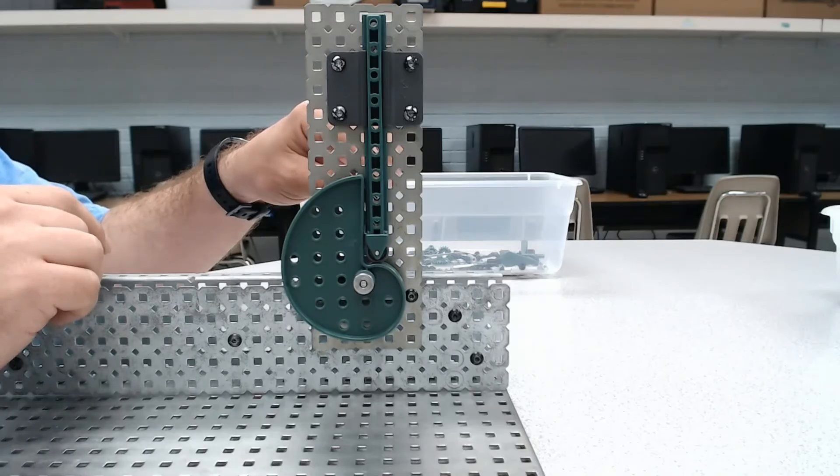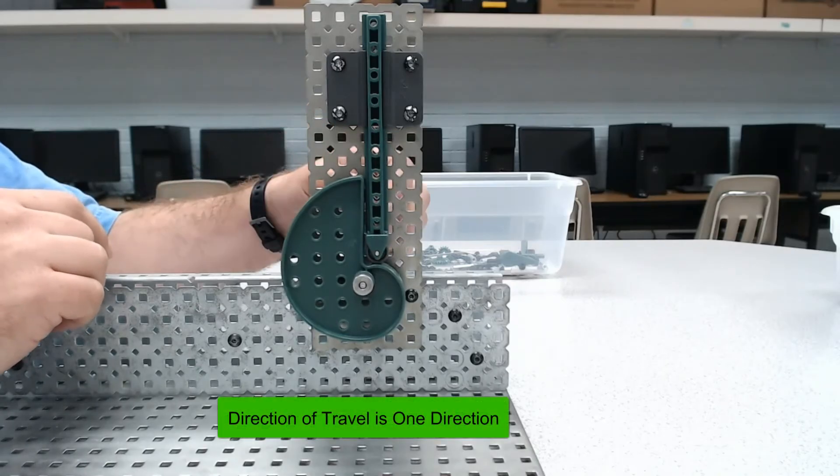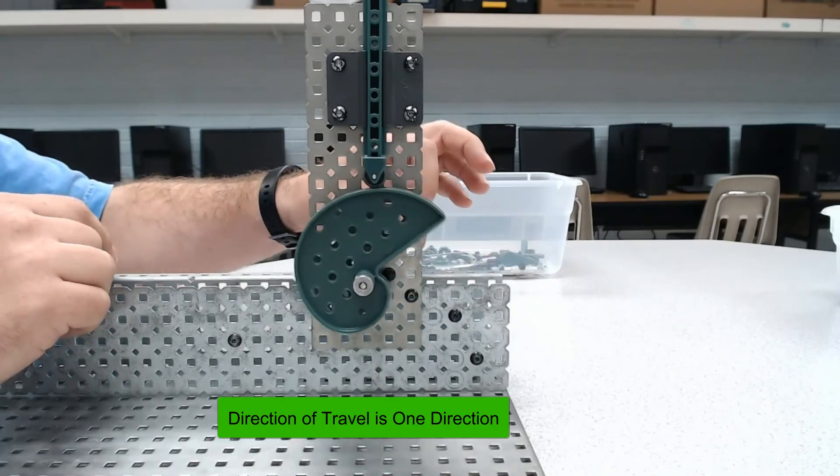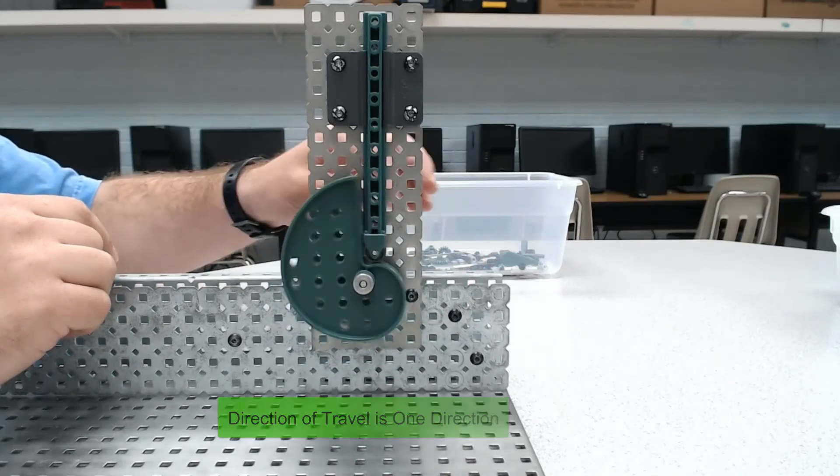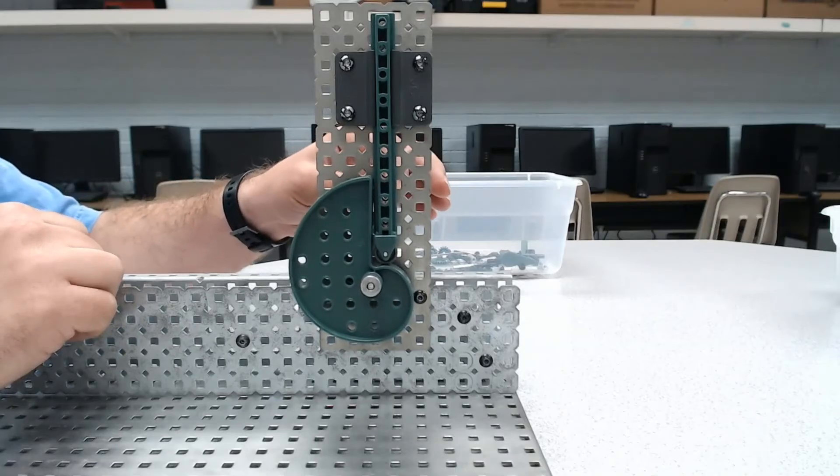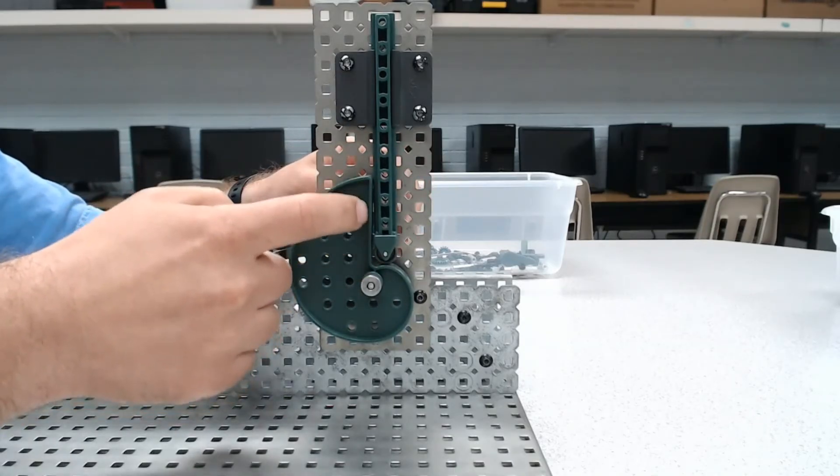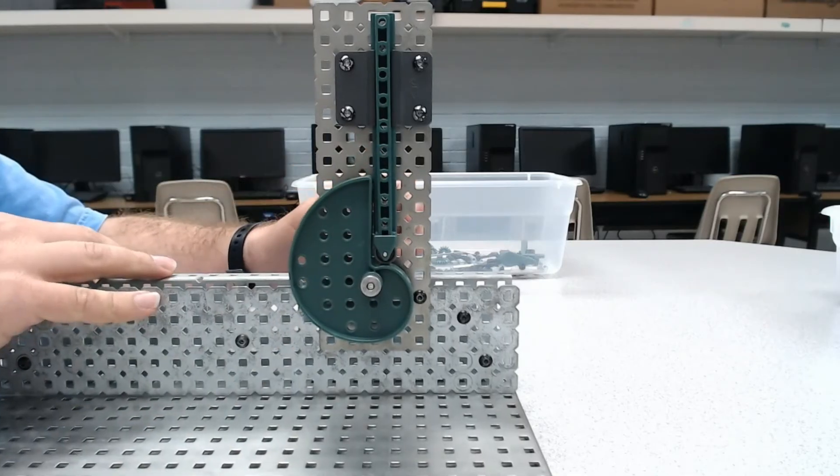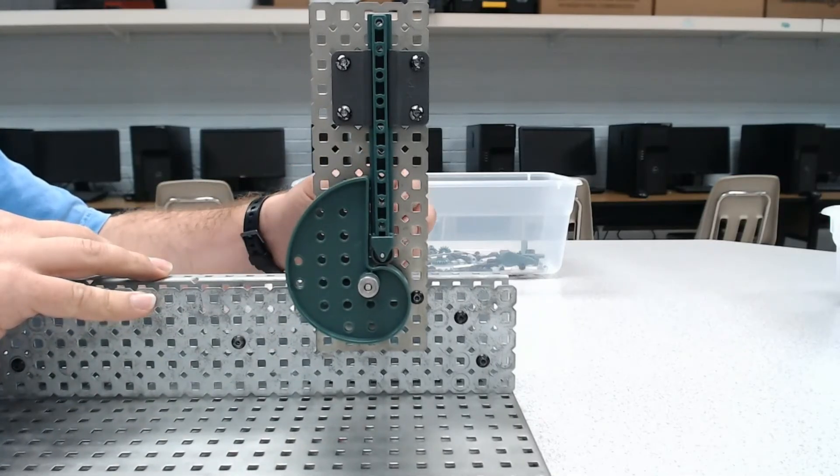If your prediction is that the direction of travel is not reversible, you would be correct. So I'm turning forward here, but what happens if I go backwards? It starts working but then I reach this point and it can't go any further because this wall on the cam is preventing this from moving. So this system also has a non-reversible direction of travel.